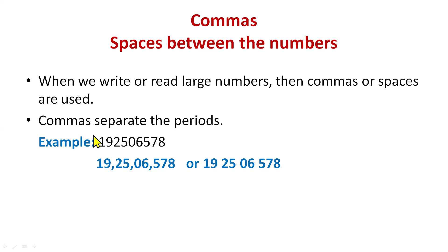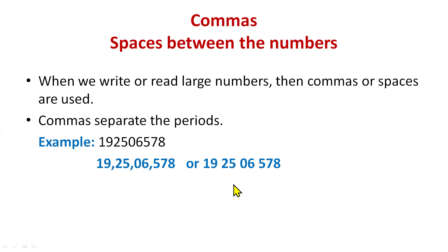Let's take an example: the number 9,19,25,06,578. We'll insert commas to separate the periods — ones house, thousands period, lakhs period, and crores period. So we put a comma after the first three digits from the right, then after every two digits. Similarly, spaces can be used in place of commas between the periods so we can easily recognize that the digits belong to different houses — for example, 910 is from the crores period.